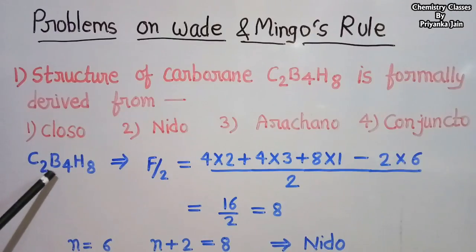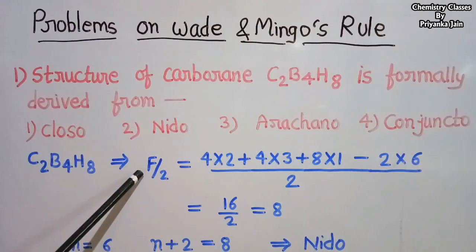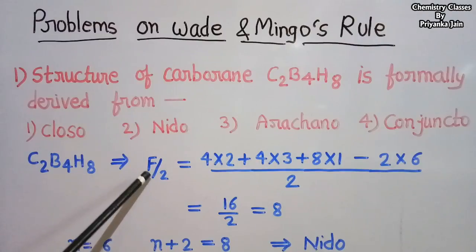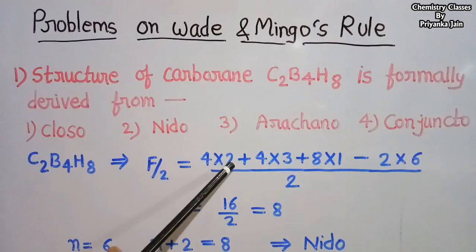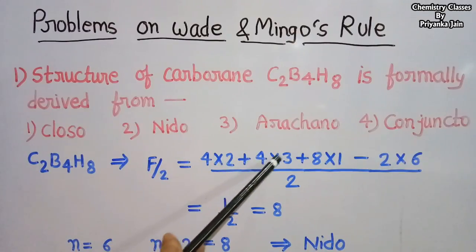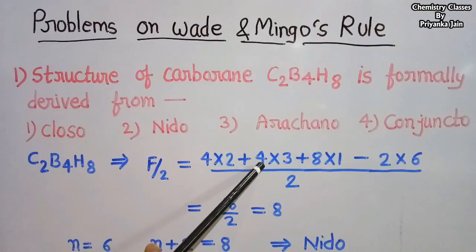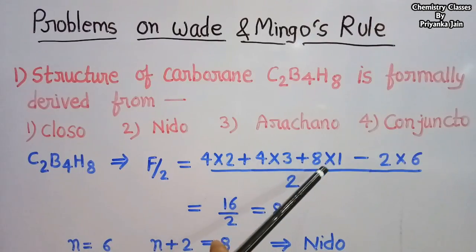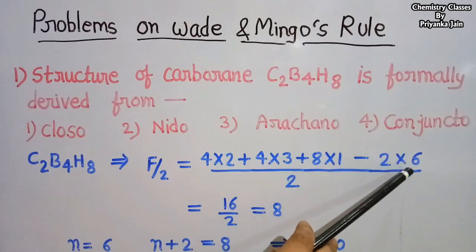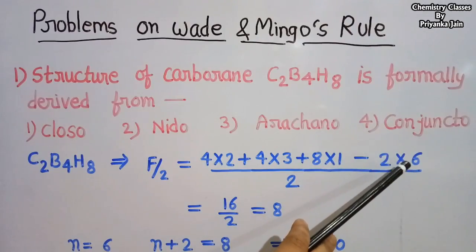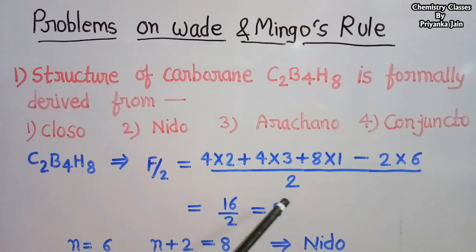In the case of C2B4H8, we use the formula for the number of skeletal electron pairs: SEP = (4×number of C atoms) + (3×number of B atoms) + (1×number of H atoms) − 2n, all divided by 2. That gives us 4×2 + 3×4 + 1×8 − 2×6, divided by 2, which equals 8.